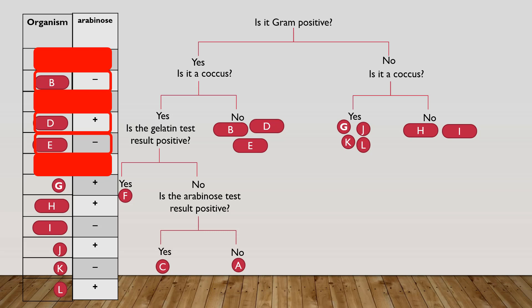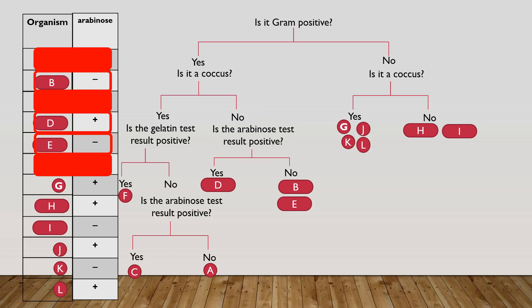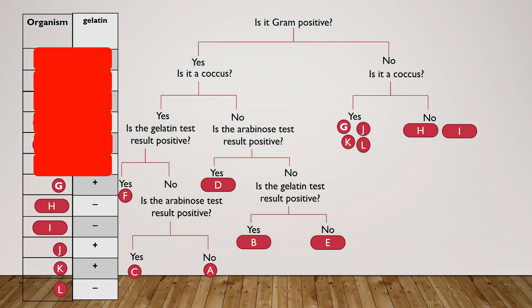So I'm going to move on now to the next group. That's bacteria B, D, and E. Again, notice that I can ask the same questions more than once, only if it helps separate the bacteria within the group that I'm working on. In this case, B, D, and E. So I've asked the question, is the arabinose test result positive? Yes for D and no for B and E. I was also able to ask the question, is the gelatin test result positive? That separated B from E. So it took two questions to separate B, D, and E from each other. But now I've reached the end and I can cross those off from my chart also.